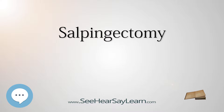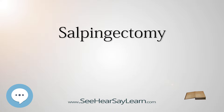Salpingectomy is different from and predates both salpingostomy and salpingotomy. The latter two terms are often used interchangeably and refer to creating an opening into the tube, e.g. to remove an ectopic pregnancy, but the tube itself is not removed. Technically, the creation of a new tubal opening by surgery would be a salpingostomy, while the incision into the tube to remove an ectopic is a salpingotomy.